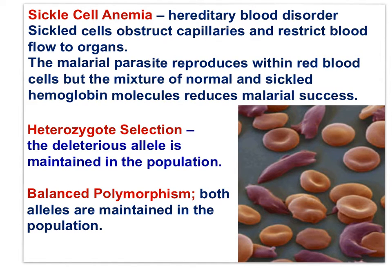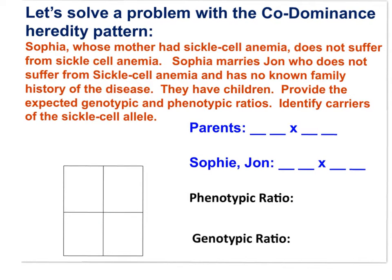Heterozygous selection is sometimes called balanced polymorphism. Polymorphism because the two alleles each result in a different trait — 'polymorph,' morph meaning body. The term 'balanced' is used because the two alleles are maintained by selection for the heterozygous over time. If you have studied evolution in this course, this terminology should feel familiar.